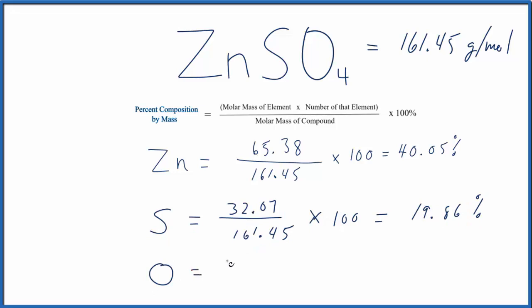Finally, for the oxygen, we have 16.00, that's the molar mass of oxygen, but this subscript here tells us we have 4. So in our equation, we have our molar mass of oxygen times the number of the element, we have 4 of them. Divide that by the molar mass of ZnSO4,